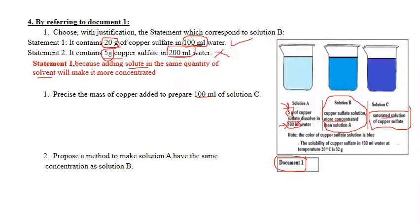Pay attention to the notes below. The color of copper sulfate is blue. The solubility of copper sulfate in 100 milliliters water is 32 grams. Since C is a saturated solution and we prepare 100 milliliters, we need to add the same mass as the solubility.